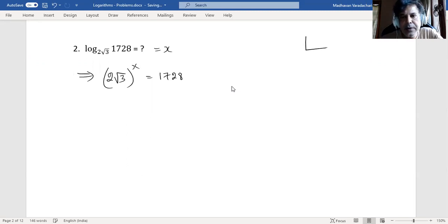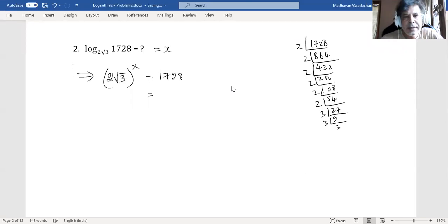Now let us factorize 1728 to find out how we can express this. So I can write this as 2, how many 2s: 1, 2, 3, 4, 5, 6. That's 2 to the power 6, and then there are three 3s.